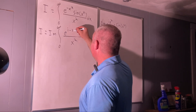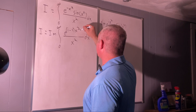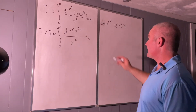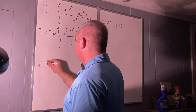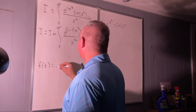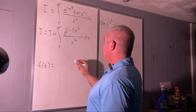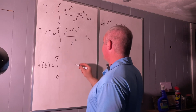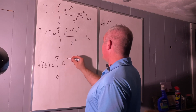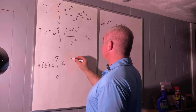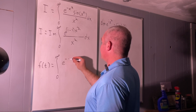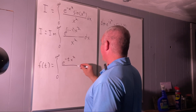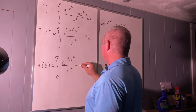Now we will re-parameterize this integral. We create a function of t that is equal to the integral from zero to infinity of e to the negative tx squared over x squared dx.